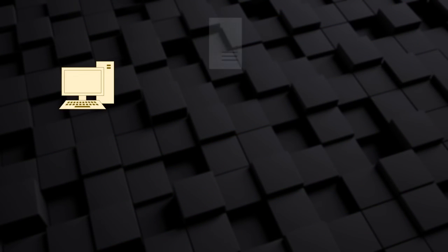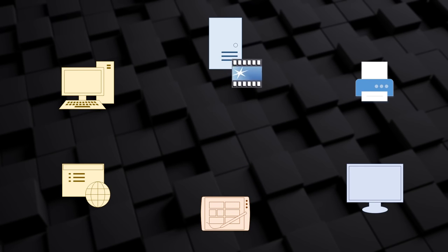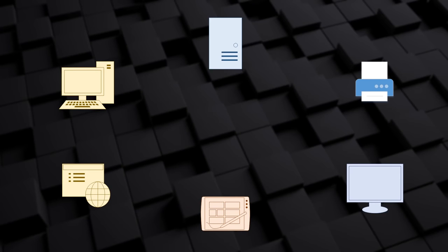At work or home you have a bunch of devices — computers, printers, TVs, and so on. You connect these by means of a network. When the devices are connected, they're able to share data. This could be sending a print job to a printer, sending an email, or streaming video. It can also be used for sharing an internet connection. Mostly, network users are unaware of the network they're using — as long as they can browse the internet or do their job, they're usually fine.